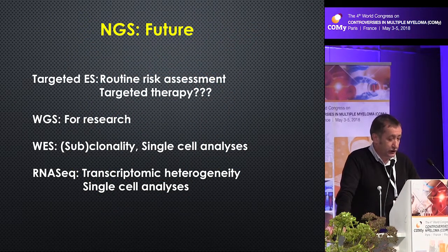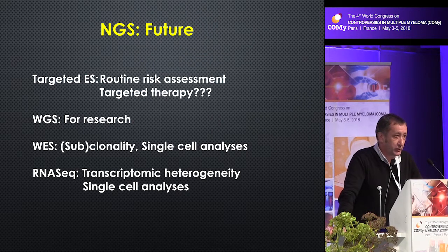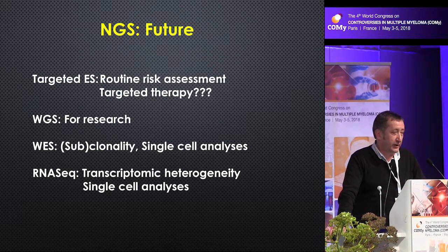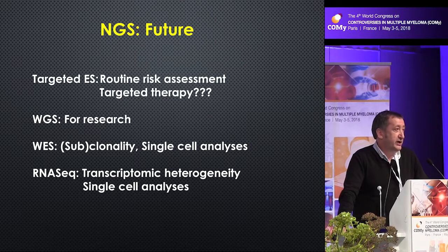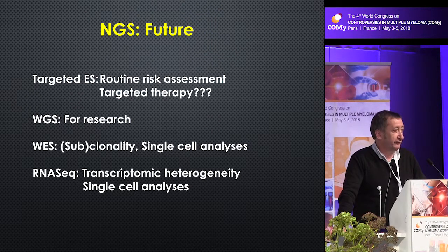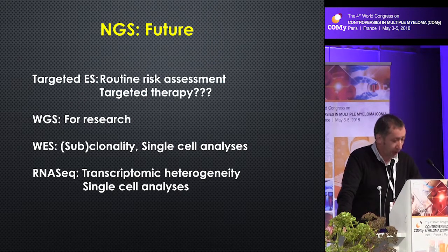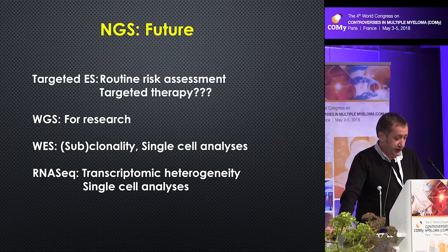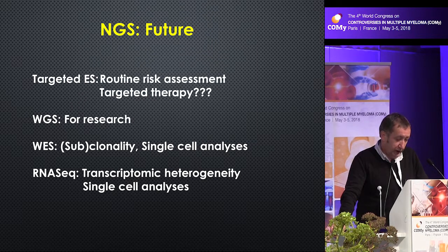For the future, I think that targeted exome sequencing will be the standard of care for many patients, at least in Europe, the US, and Canada, because it is still a little bit expensive. Will it be useful to try to select patients for targeted therapy, except for BRAF mutations? I'm not totally convinced that KRAS and NRAS mutations are really druggable. All other kinds of sequencing — whole genome, whole exome, RNA sequencing — I think it is more for research, but we need to use that to understand the genetics of myeloma.